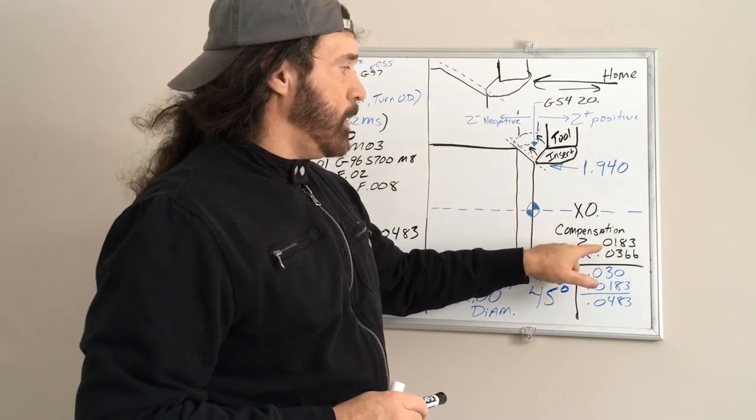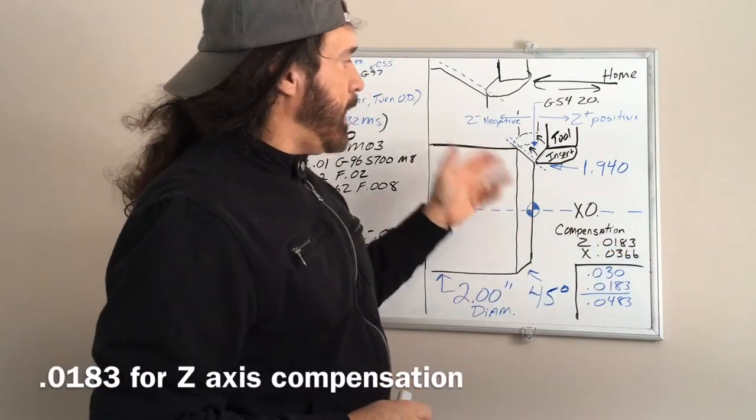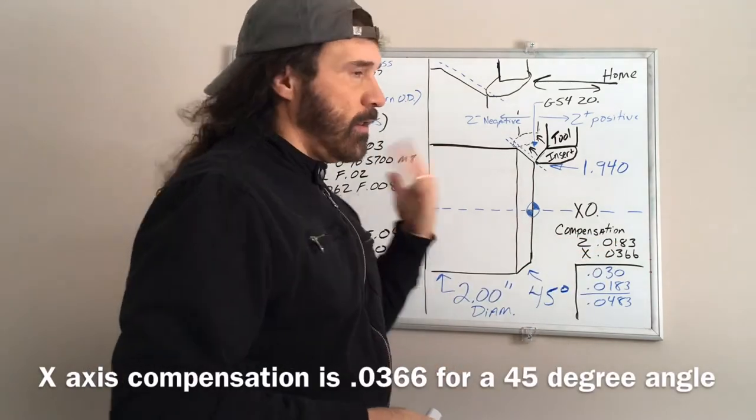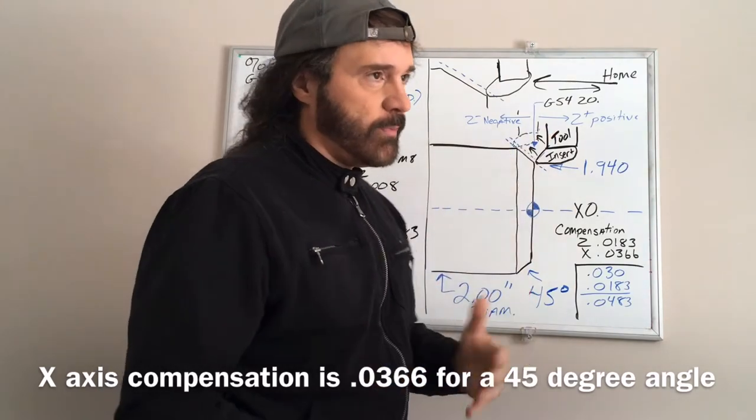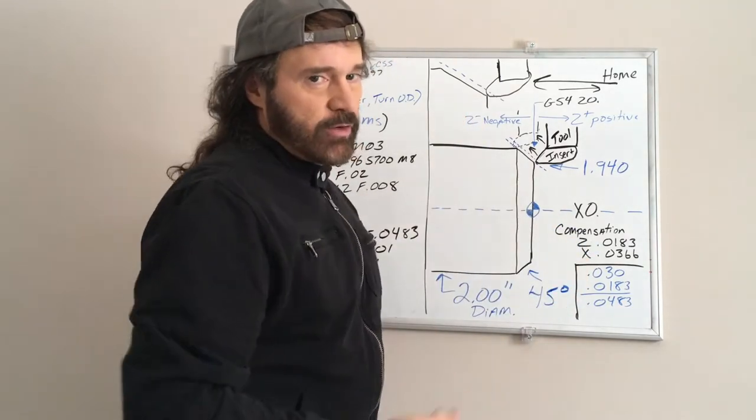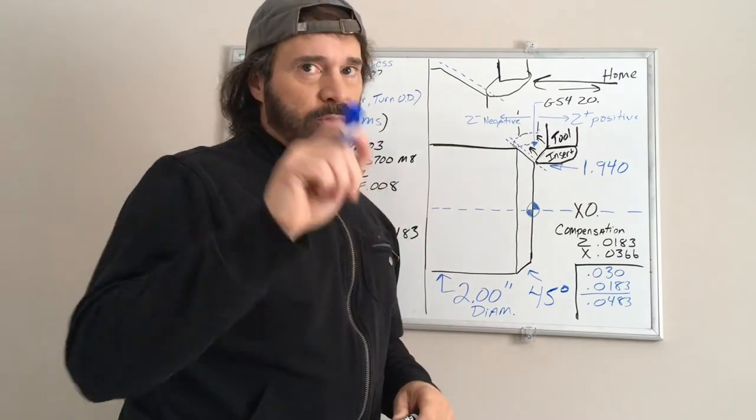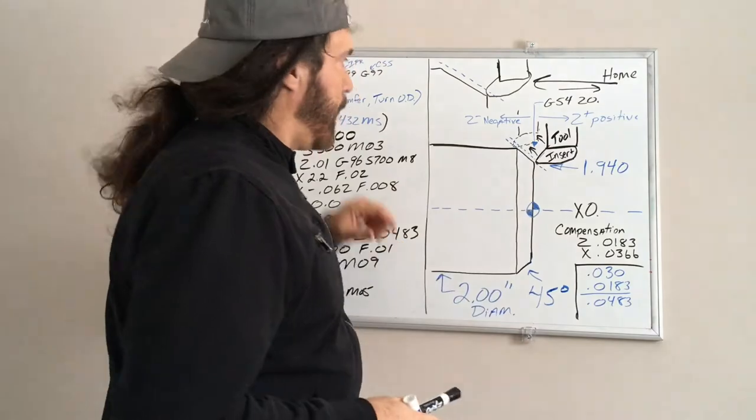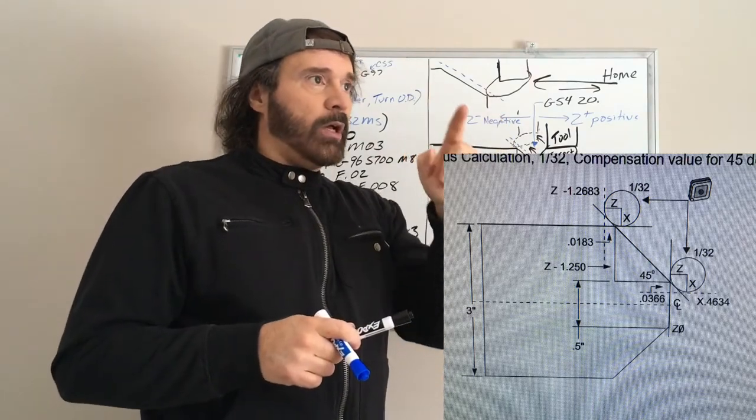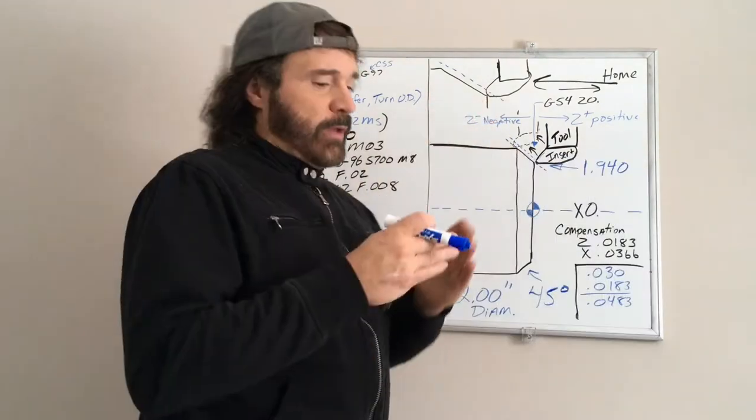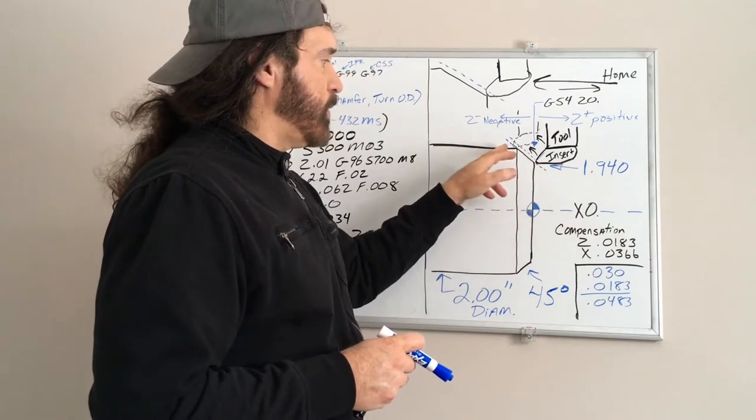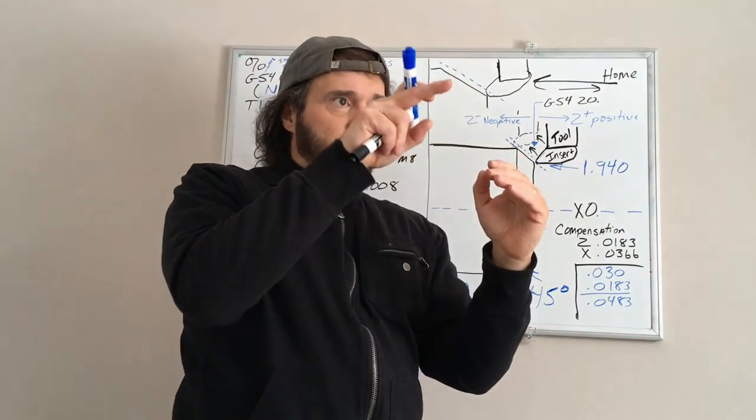Let's say we want to do a 30 thousandths chamfer. The compensation value for Z is 0.0183, and X it's just doubled, so you're taking that and you just double it. Because on a lathe your X dimensions are always doubled. The reason that is, I did a pretty sad looking drawing, that's why I will dub in the picture from the Haas manual. They show a better description of why you have to add compensation, because when you're dealing with a radius tool it's not a sharp point where you can do a command to go to say 1.940 up to 2 inches, because you're dealing with that radius of the tool.